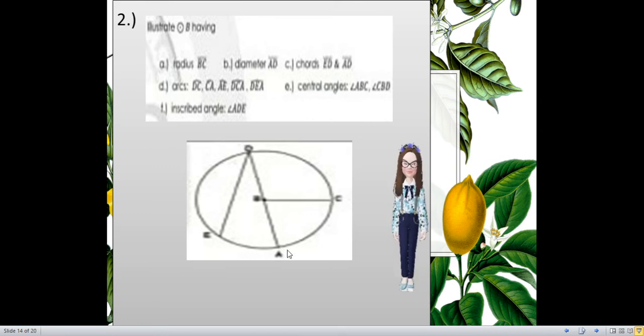And, for the arcs, since you already built this, you can take a look if you gave the arcs that is being asked. So, we are being asked to construct the arcs DC. It's already there. Arc CA, I already have it. Arc AE, I already have it. Arc DCA, I already have it. And, Arc DEA. So, we're done with that.